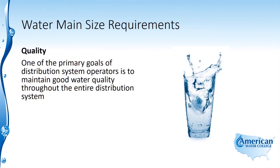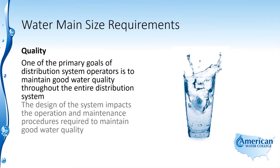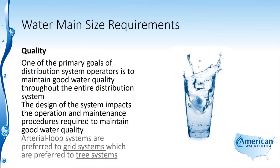One of the primary goals of distribution system operators is to maintain good water quality throughout the entire distribution system. The design of the system impacts the operation and maintenance procedures required to maintain good water quality. Arterial loop systems are preferred to grid systems, which are preferred to tree systems.